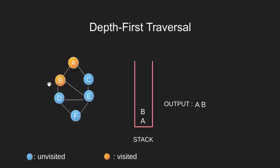Now we look at the unvisited adjacent nodes of B. Node D and node E are the required neighbors. We choose D, push it onto our stack, print it and also mark it as visited.